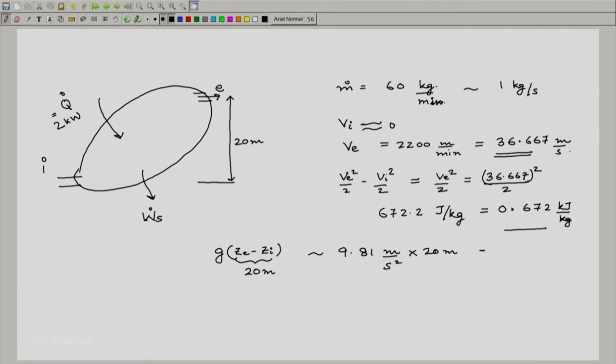This would be 196.2 joule per kg. It is a very small number, 0.196 joule per kg.